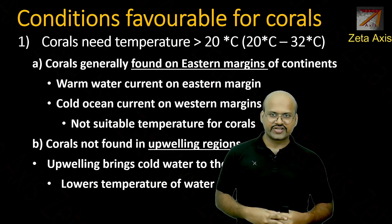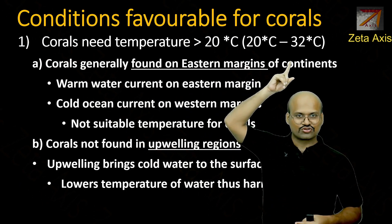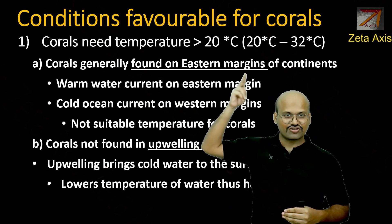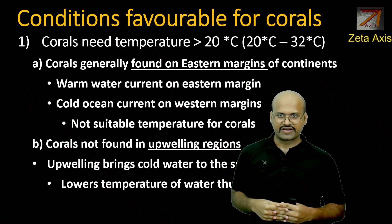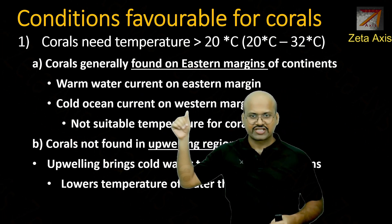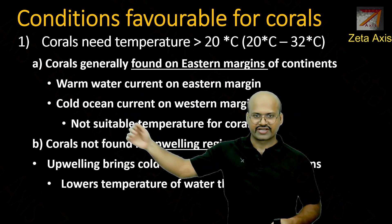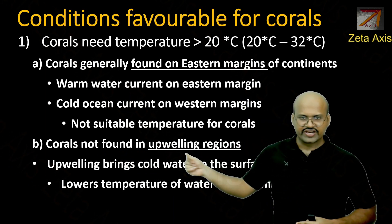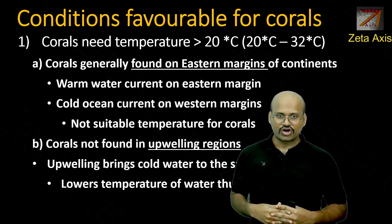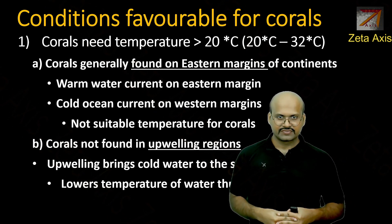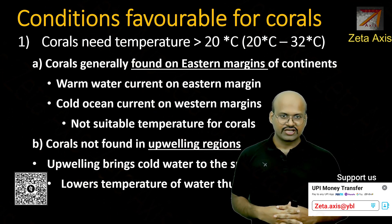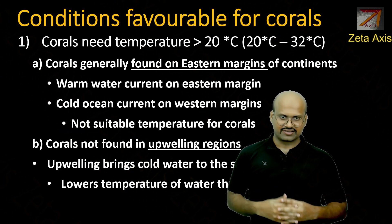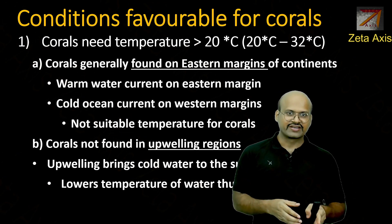To summarize, corals need a temperature between 20 and 32 degrees Celsius but are more sensitive to lower temperatures. On the eastern margin of continents we have warm ocean currents and corals are found there, while on the western margin cold currents mean corals are rarely found. Corals are also not found in upwelling regions. Note that we are only discussing tropical corals, not the deep water corals that have been discovered recently.